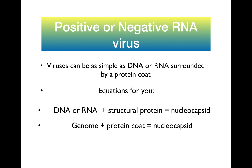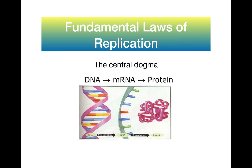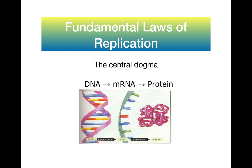The DNA or RNA represents the genome of that virus and the structural protein is the protein coat — that's a nucleocapsid. The central dogma is where we come back to for the basics of replication and gene expression: it starts with DNA, converted to mRNA, and then converted to protein. The process of DNA being turned into mRNA is known as transcription, and mRNA being turned into protein is known as translation.